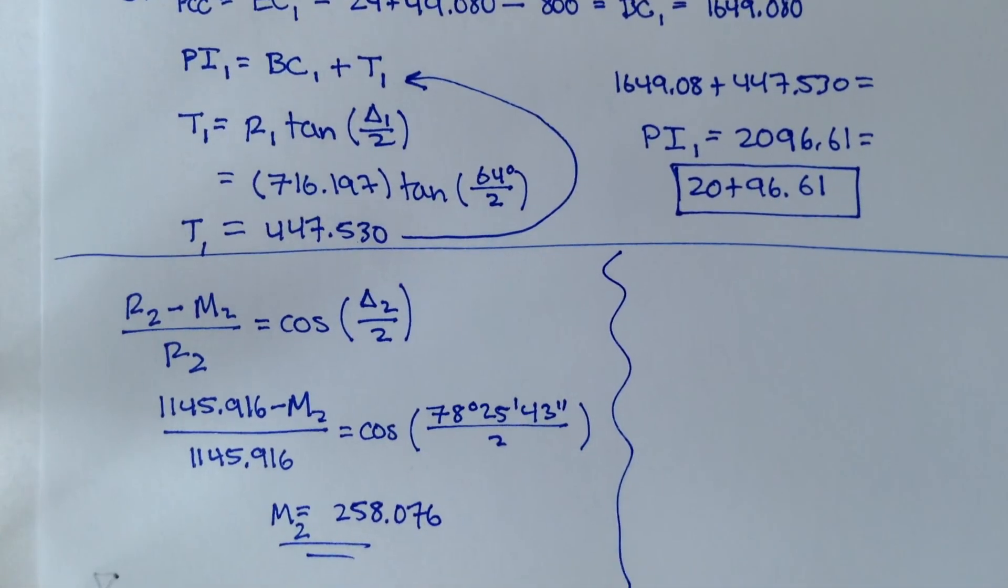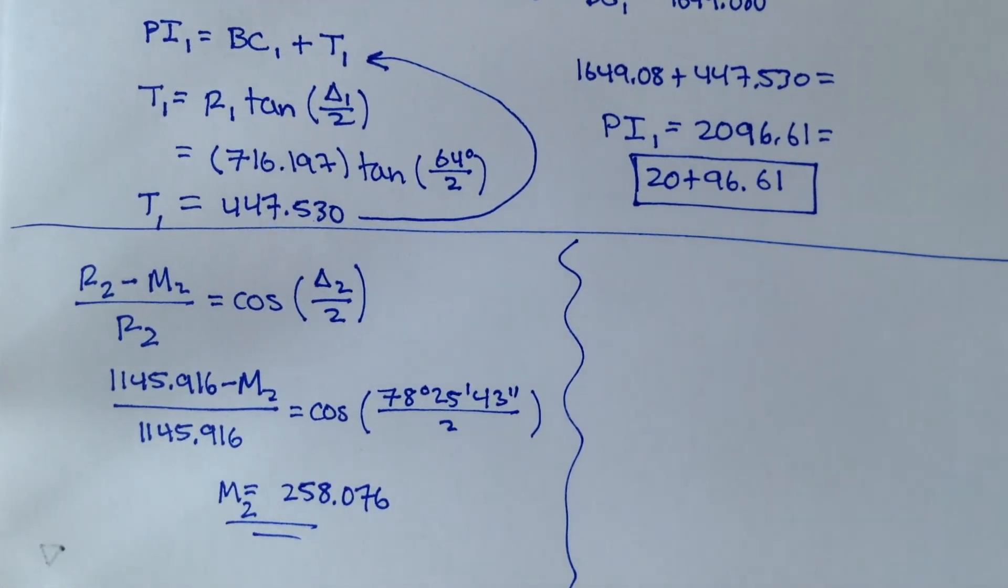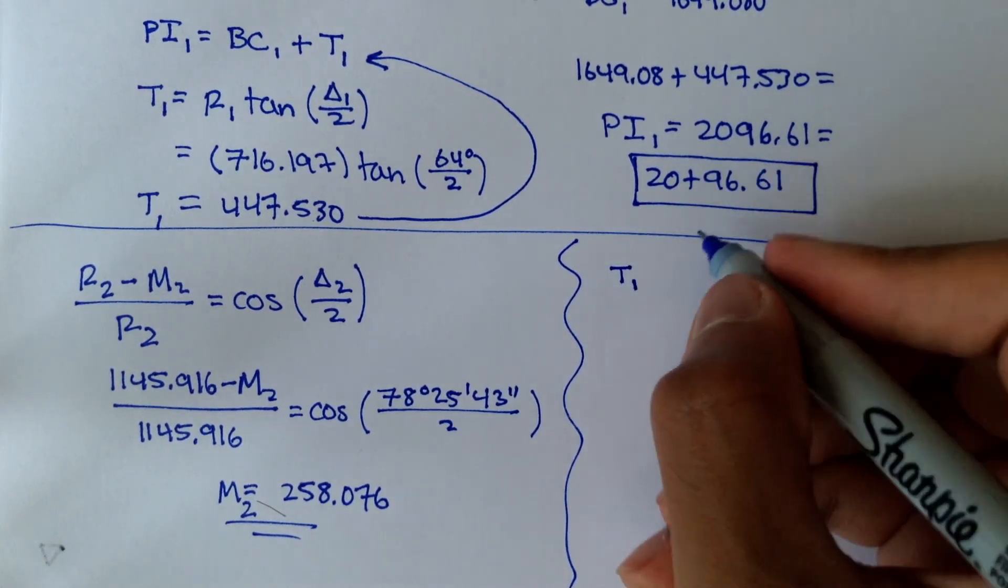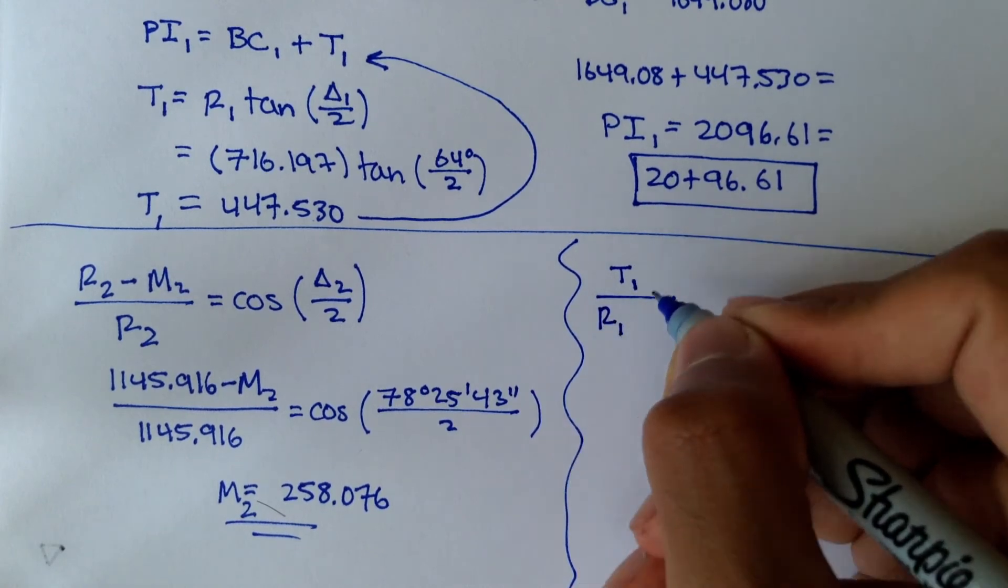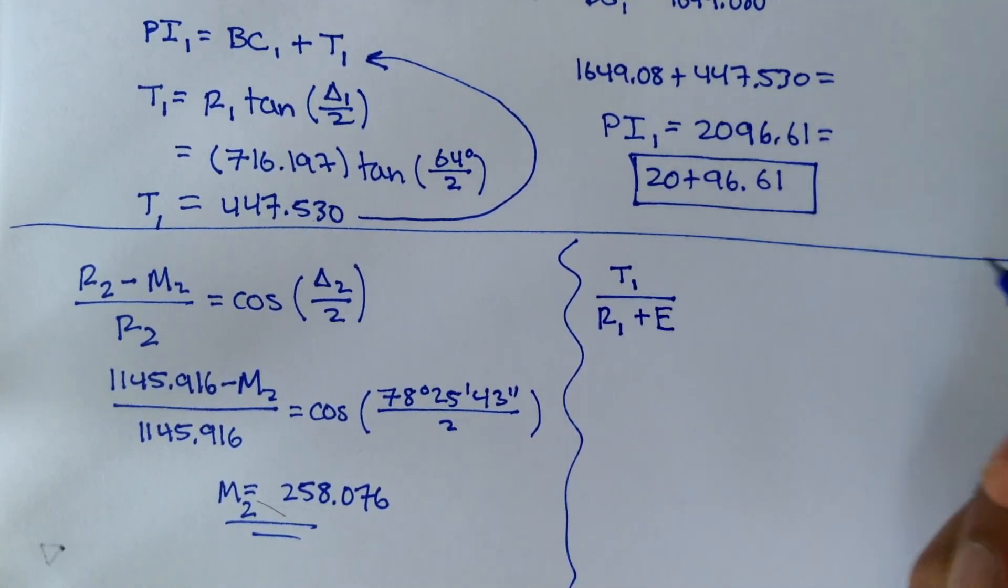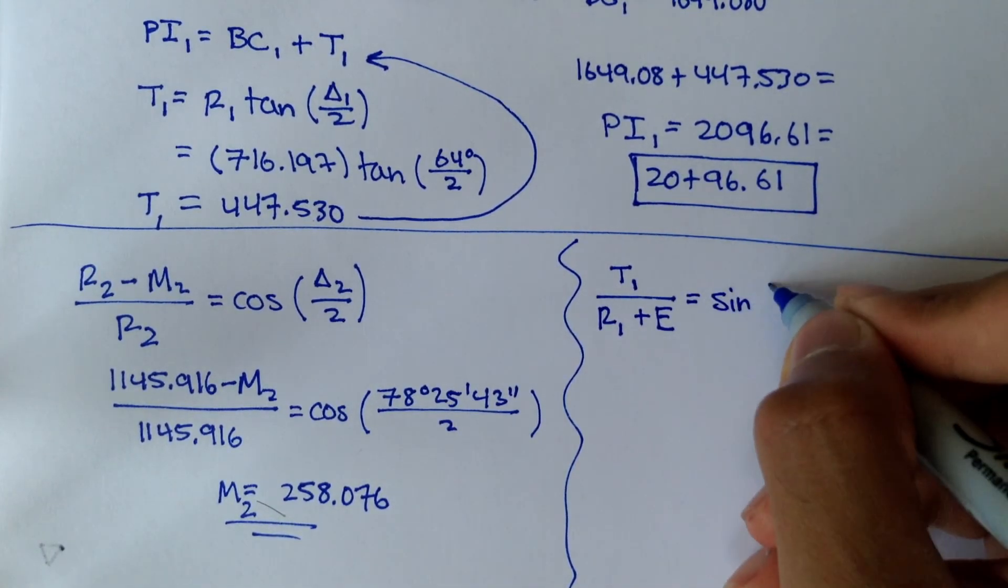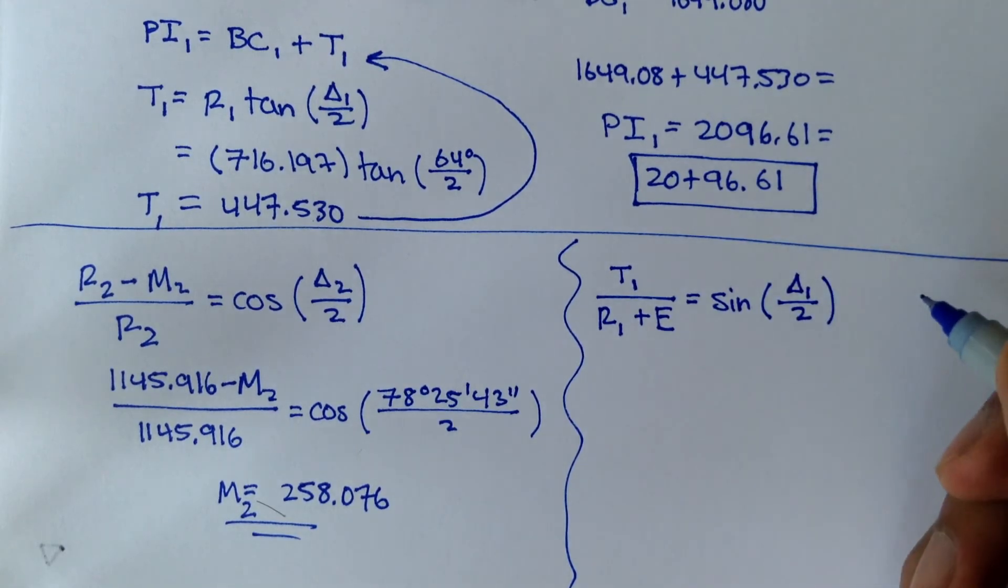So that's how you figure out what the middle ordinate for curve 2 is. Now, the external distance for curve 1, remember our formula for that was T, or the tangent distance,